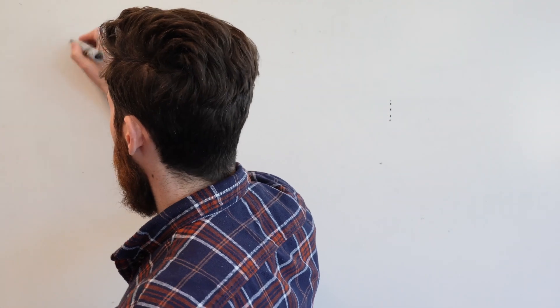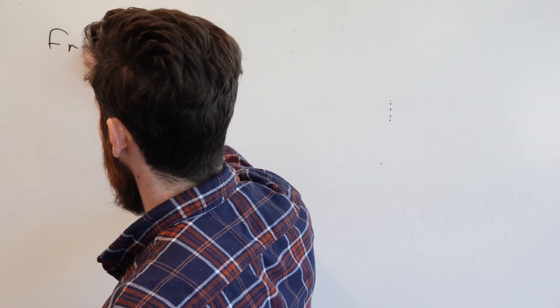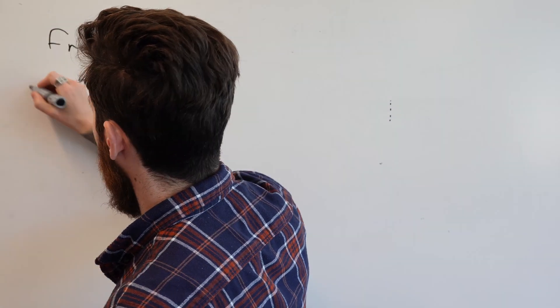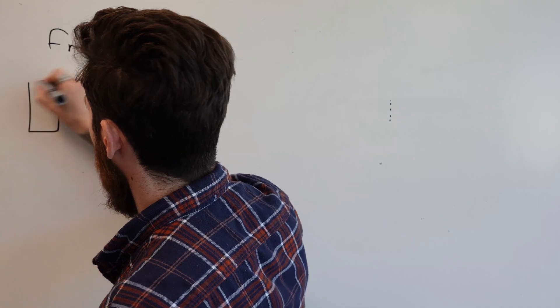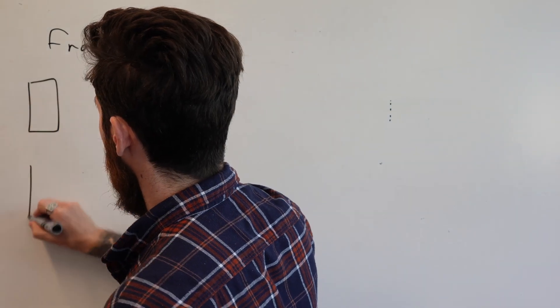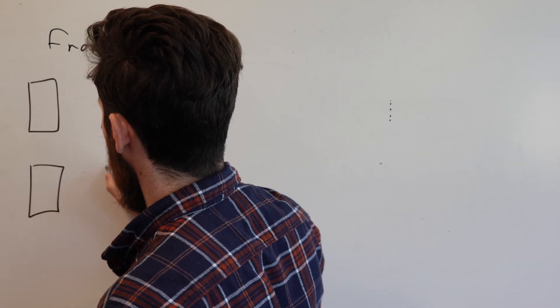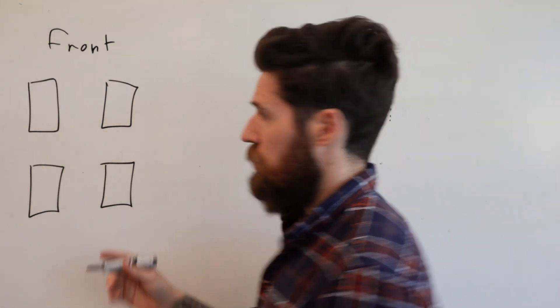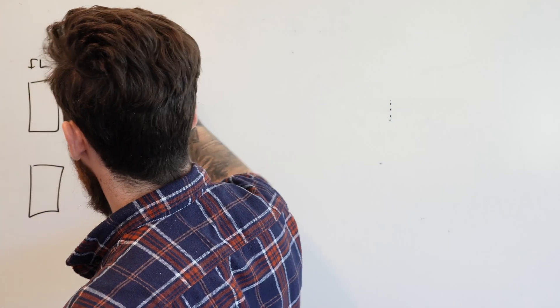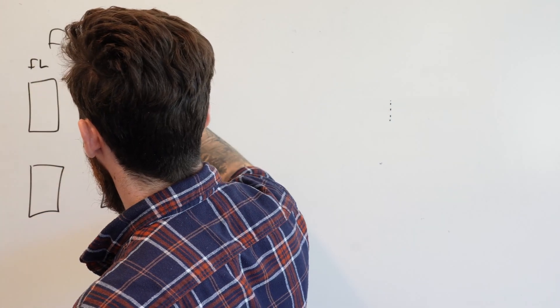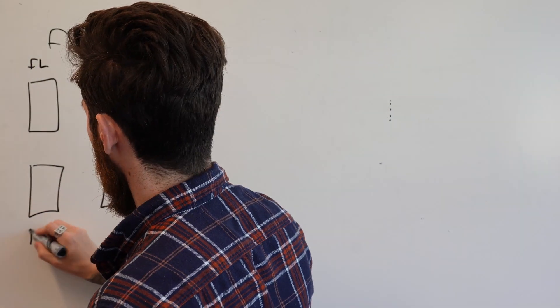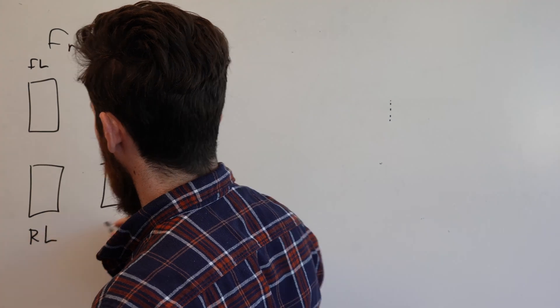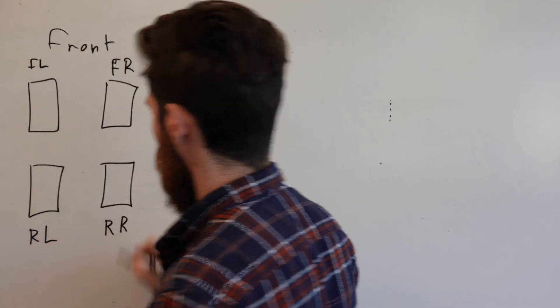Let's start by taking a look at a picture of what a robot might look like. We're going to have the front of a robot up here, and we'll have four wheels on this robot. Our robot is going to have front left, front right, rear left, and rear right.